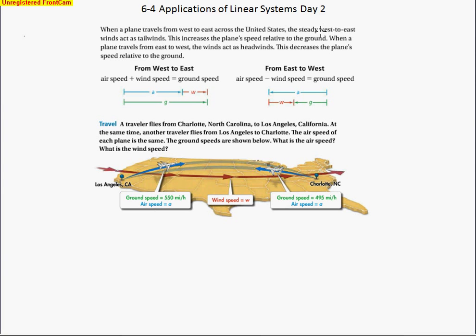When the plane travels from east to west, the wind acts as a headwind. So it's pushing against the plane, making it go slower. This decreases the plane's speed relative to the ground.